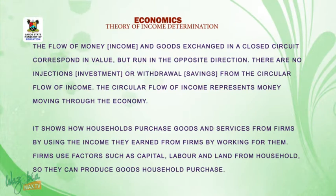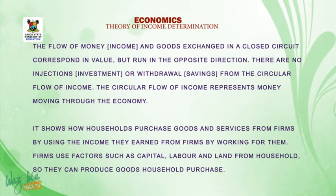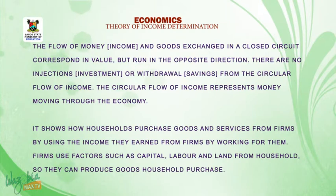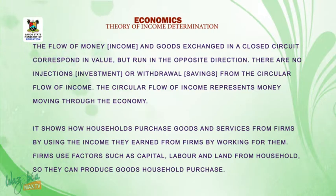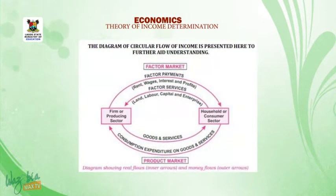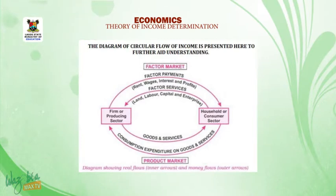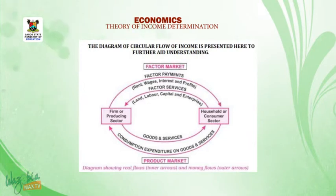The circular flow of income represents money moving through the economy. It shows how households purchase goods and services from firms by using the income they earned from firms by working for them. Firms use factors such as capital, labor and land from households so they can produce goods that households purchase. A diagram of the circular flow of income is presented to further aid your understanding.